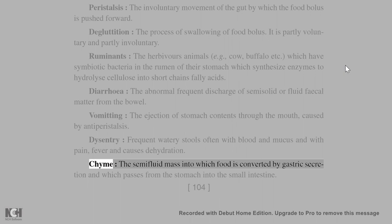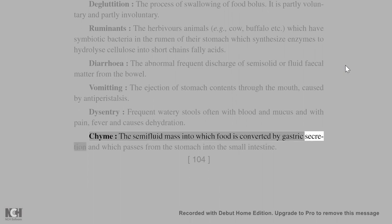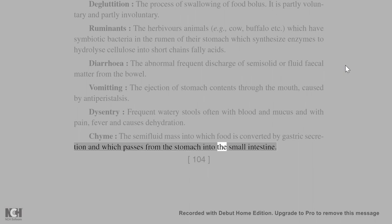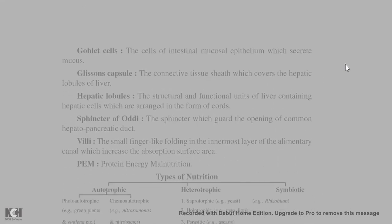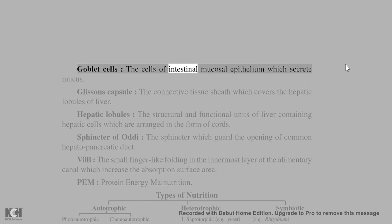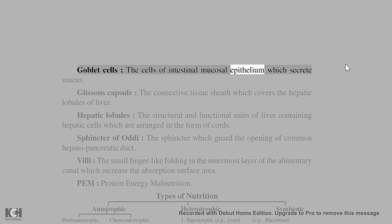Chyme: the semi-fluid mass into which food is converted by gastric secretion, which then passes from the stomach into the small intestine. Goblet cells: cells of the intestinal mucosal epithelium which secrete mucus.